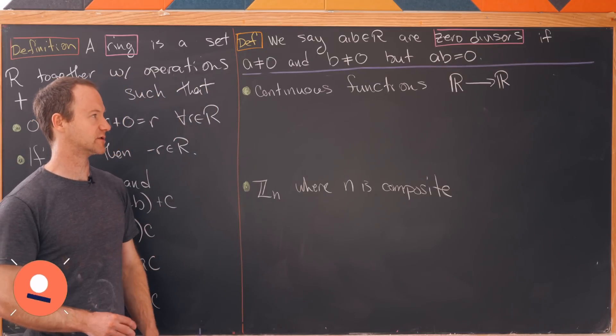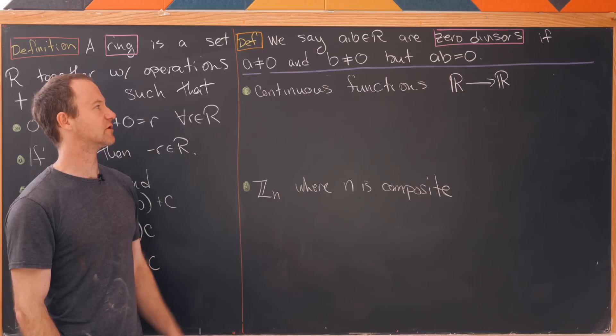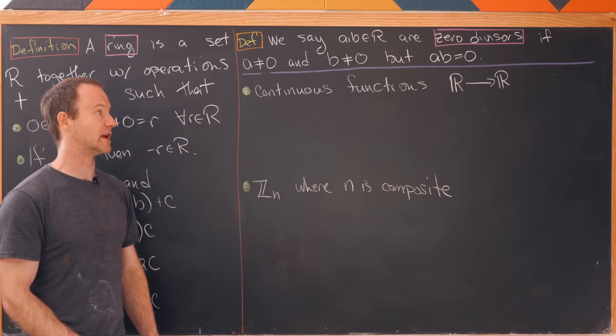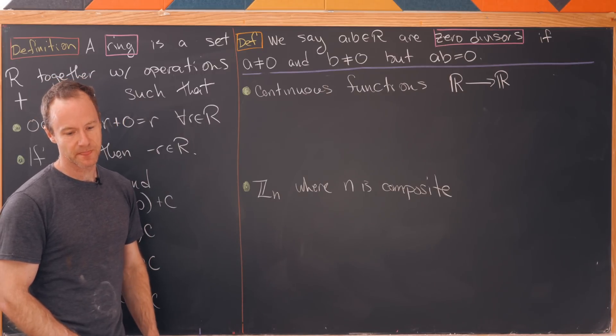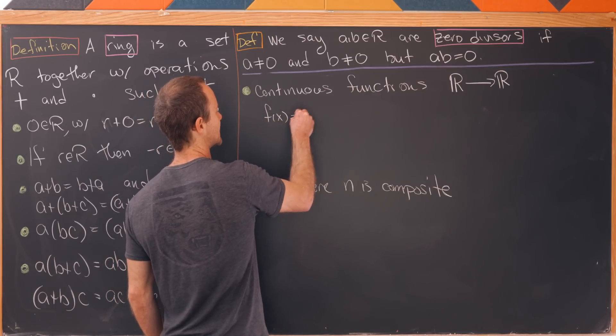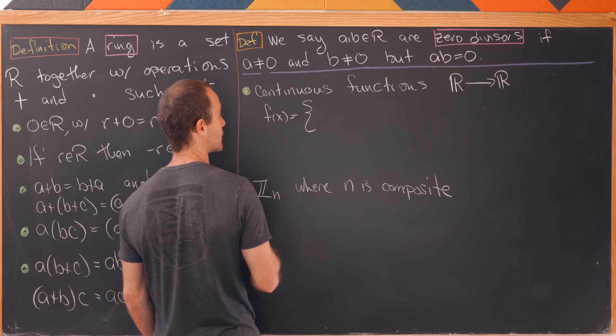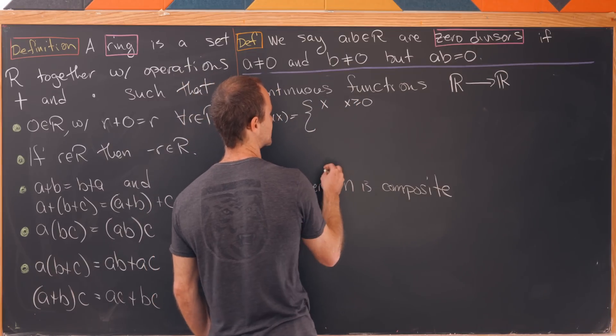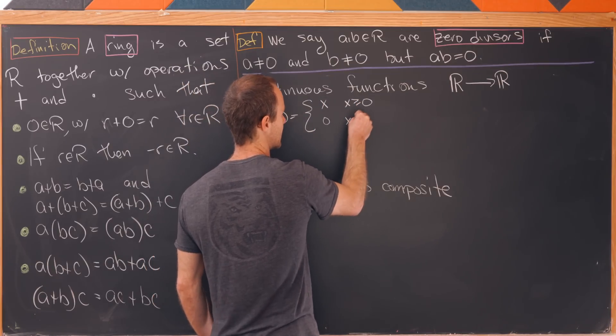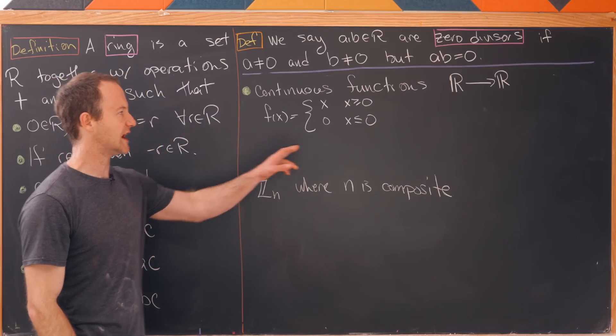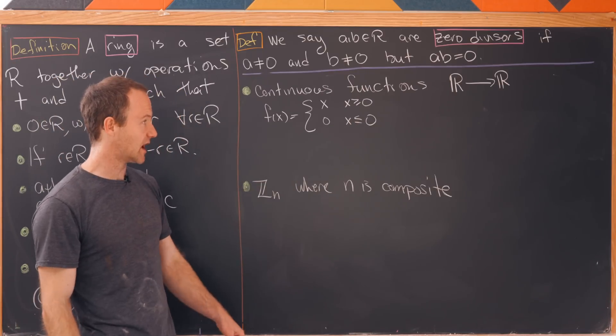Okay so now back to the examples. Let's find a zero divisor pair inside of the ring of continuous functions and I particularly like this example. Let's take this first function f(x) to be defined in a piecewise way: let's say it's x if x is greater than or equal to zero and it's zero if x is less than or equal to zero. I'm able to write it with overlap there because at zero it's continuous. These are always continuous functions that's our setting here.